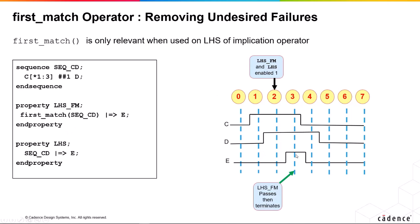We've got an E in this cycle. The one with first match passes, then terminates — that's the important thing. First match means that once it's had the first match of this sequence, it doesn't continue trying to find other matches. So this property will pass and then terminate; we've got our answer. Whereas the other one, the one without first match, will also pass and terminate, but we've got the left-hand side enabled again the next cycle.